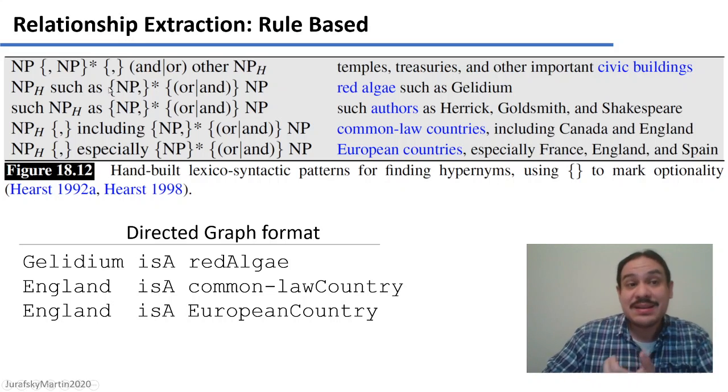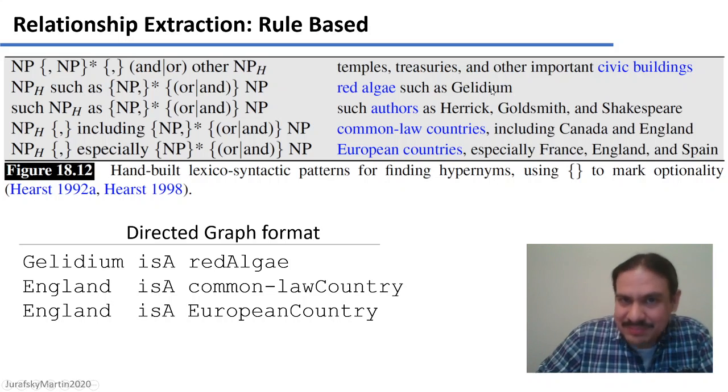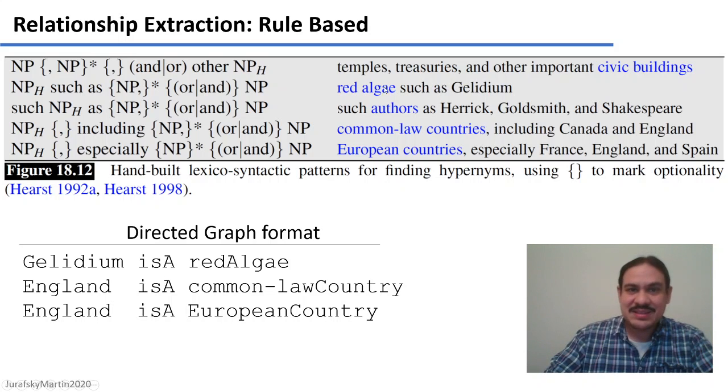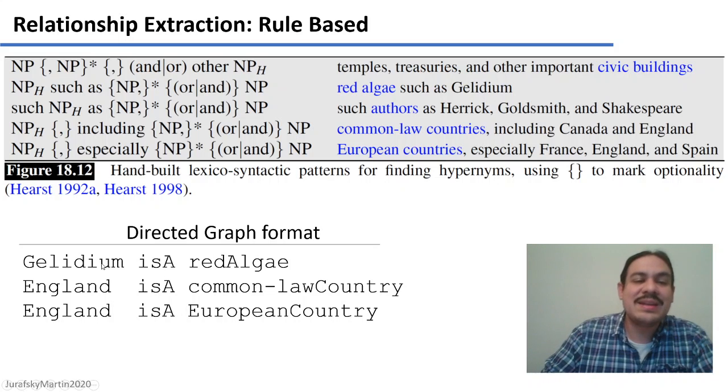Let's look at the second regular expression. This one looks for a noun, and the word such as, and then a number of noun phrases, and or a noun phrase. This regular expression would match a phrase like red algae, such as galidium, and so from this text matching this regular expression, we could extract this word and these two words here as entities, and know that galidium is a kind of red algae.